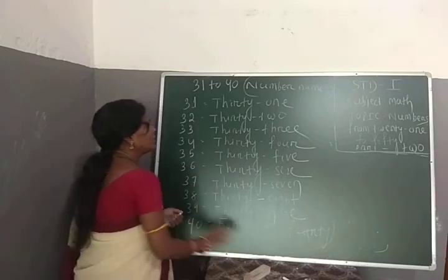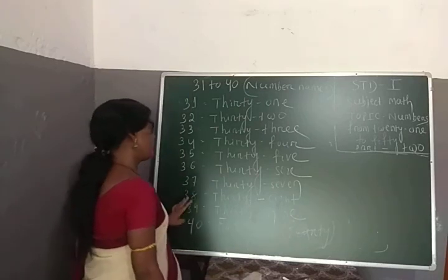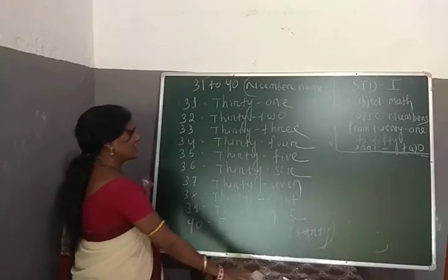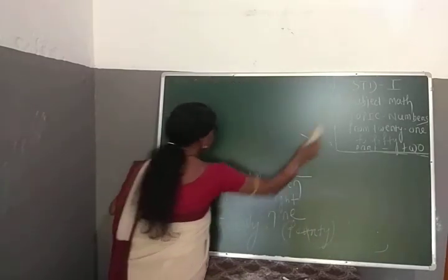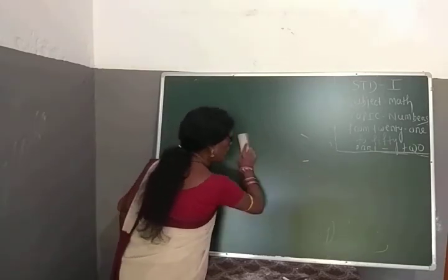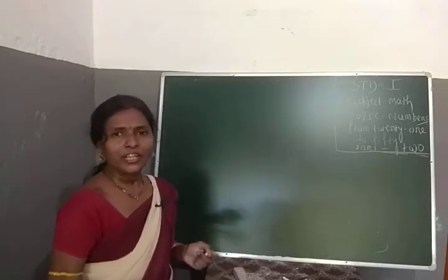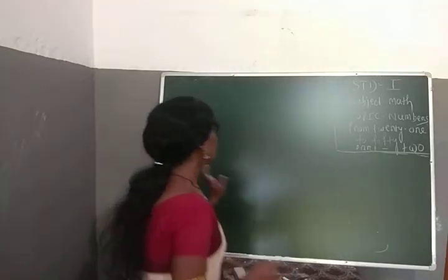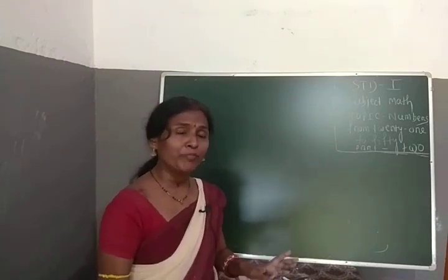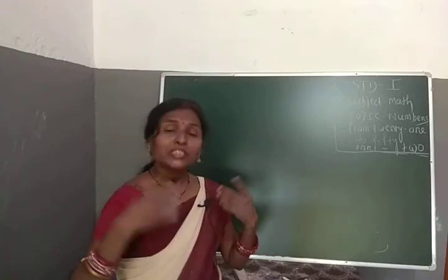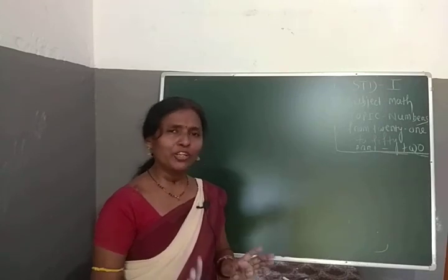So the number names of 31 to 40 are now complete. All of you just write these in your copy. We have discussed 31 to 40 in this class. Practice at home — write numbers 21 to 40 in your copy, both the numbers and their spellings. Keep practicing, keep revising, and keep learning at home. Thank you, bye-bye.